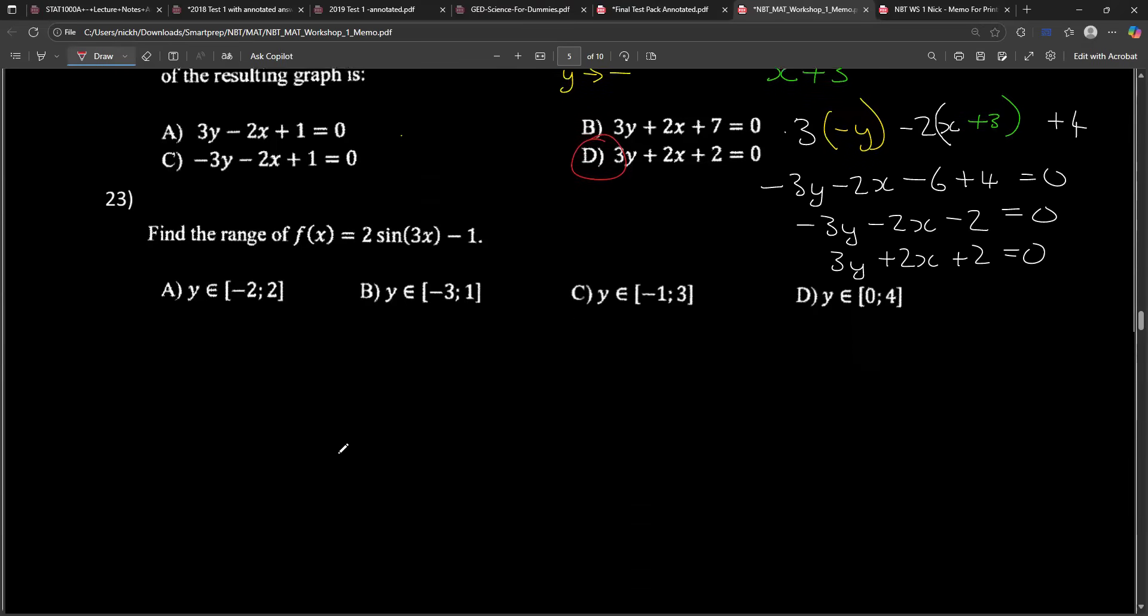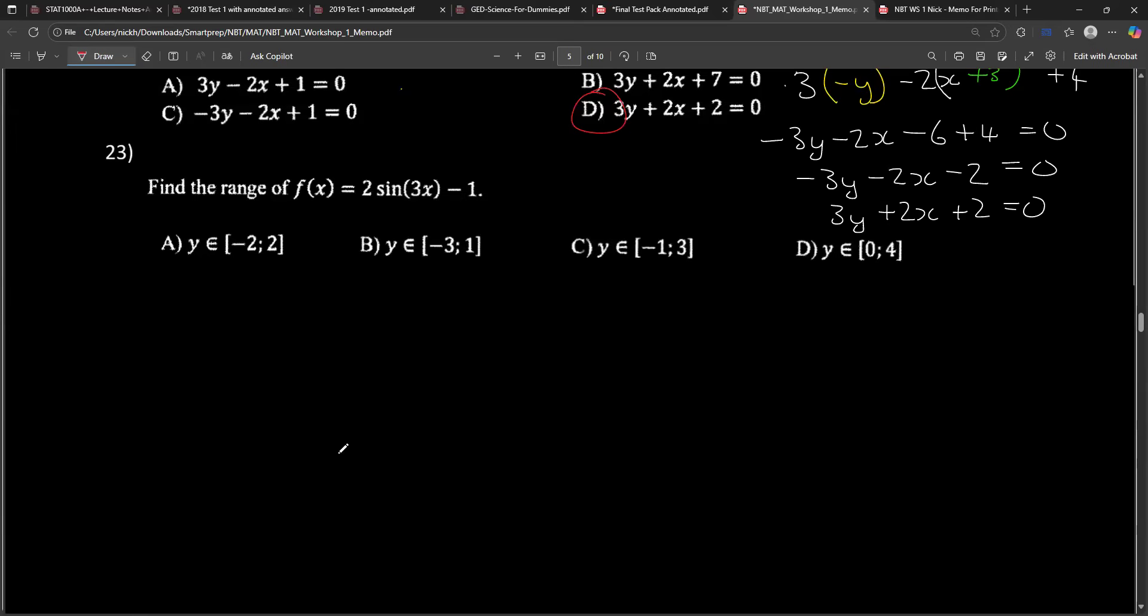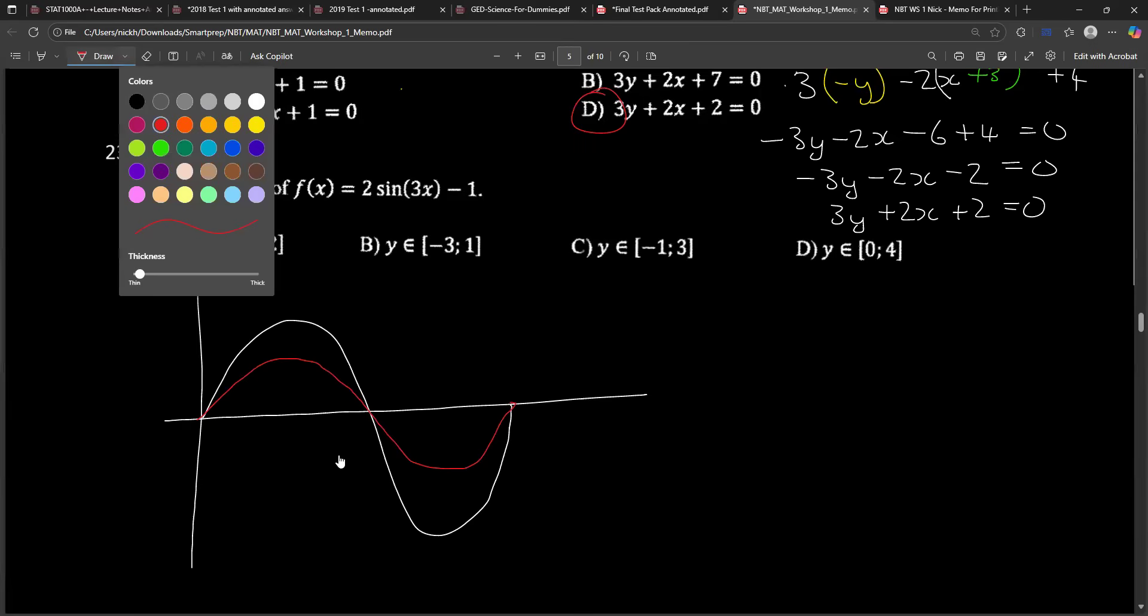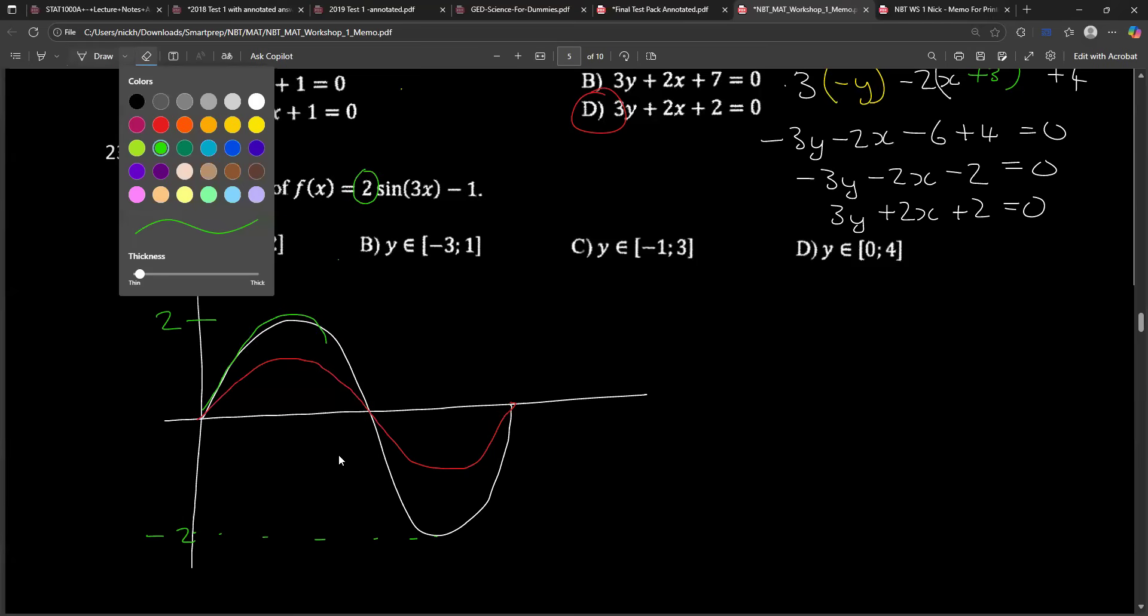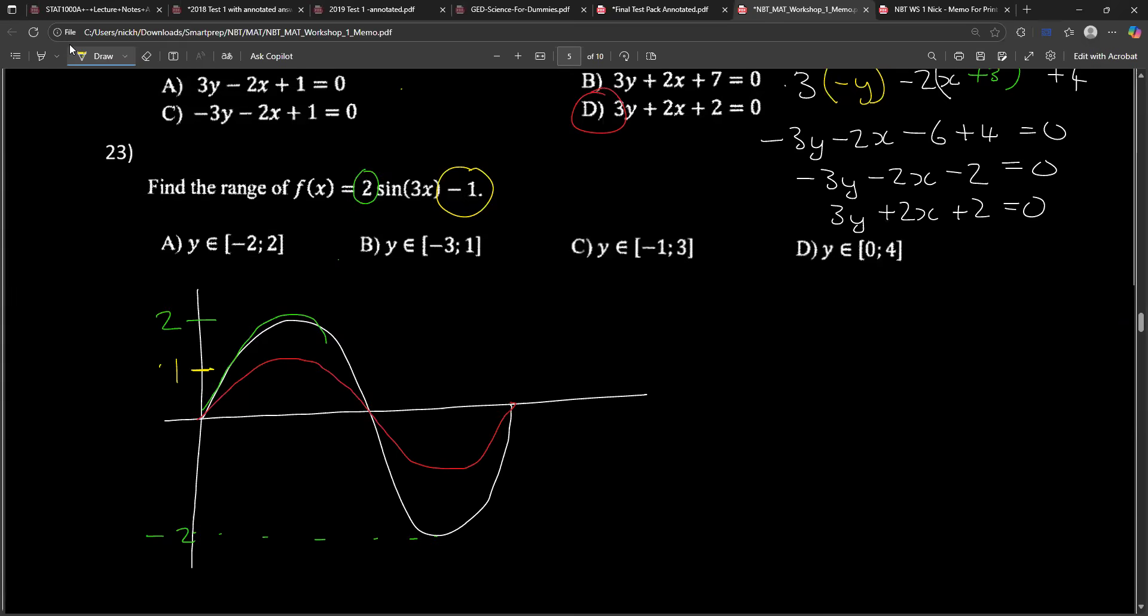Find the range of f(x) = 2sin(3x) - 1. This again is another one where I could take a fair amount of time on showing the sine graph and exactly how it works, but I'm just going to show that the normal sine x graph goes like this. If we put a 2, it doubles it to that white line there, to 2 and -2. And then we subtract 1, so we shift it down 1. So the -1 takes it down, 2 down to 1 and -2 down to -3. So our range is from 1 to -3, so that would be B.